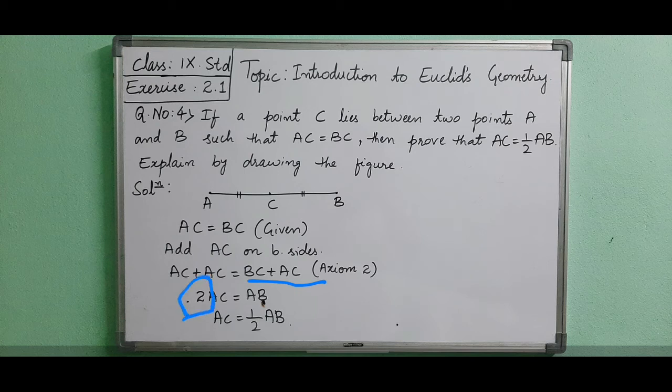This 2 is in multiplication. If you shift it, it comes to division. So, AC is equal to half of AB, which is your required result.